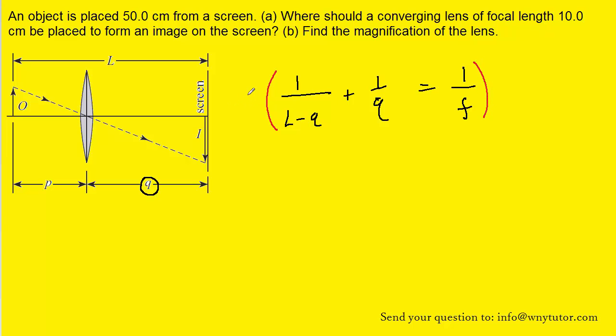And we could begin to do that by multiplying the entire equation by Q both the left hand side and the right hand side. So if we distributed the Q to each of these terms, including the term on the right hand side, we would end up with Q over L minus Q plus now here we're going to end up with Q over Q which of course is just one. And that would equal Q over F.